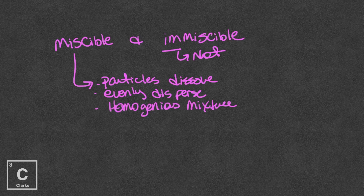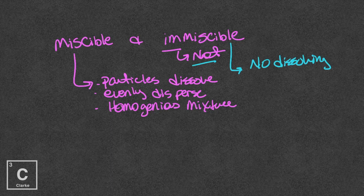Immiscible — since we've got that prefix meaning not, these particles are not going to completely dissolve. In fact, they're not going to dissolve at all. No dissolving, the particles aren't going to evenly disperse, and we're going to see distinct layers. A really common immiscible example is oil and water. If you think about oil and water, they're not going to dissolve — they're going to form layers. I've got an example of that. Let me show you.